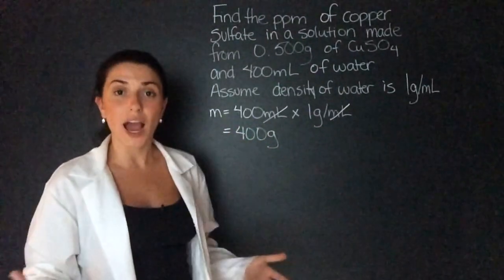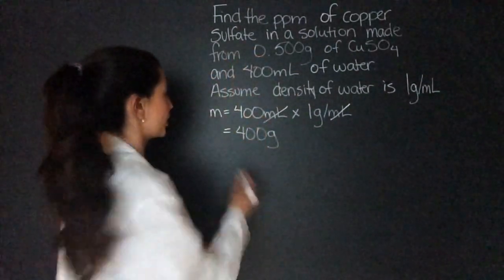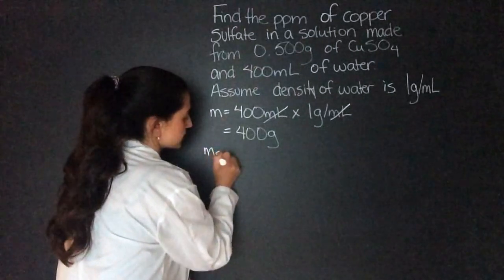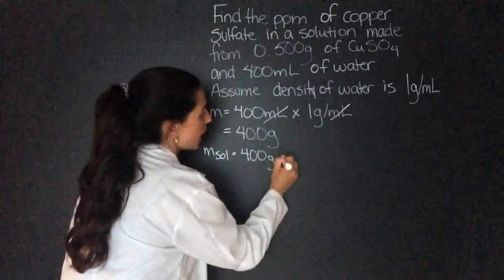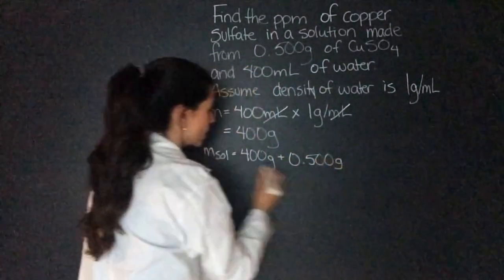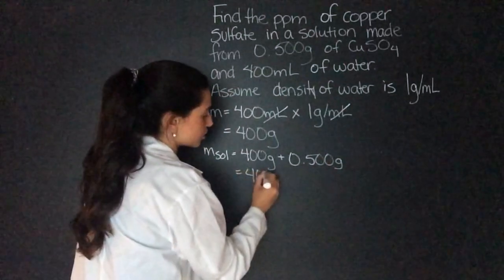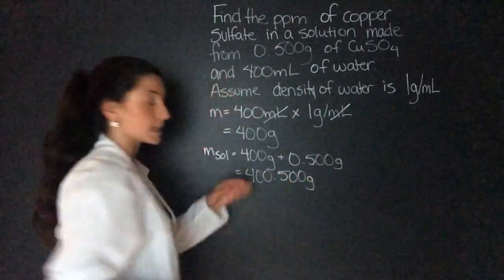Now the mass of the entire solution is the copper sulfate plus the water. So mass of solution is going to equal 400 grams plus 0.500 grams. So I'm left with 400.500 grams in total.